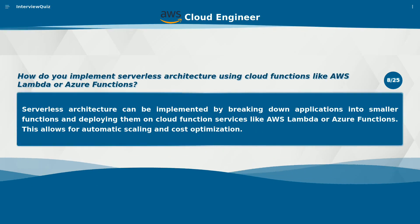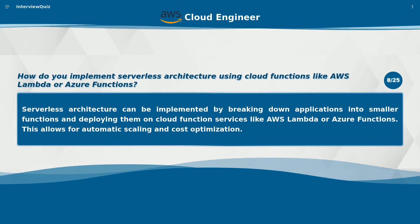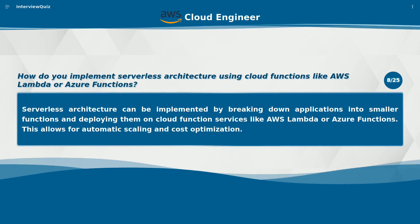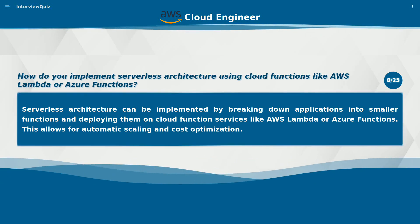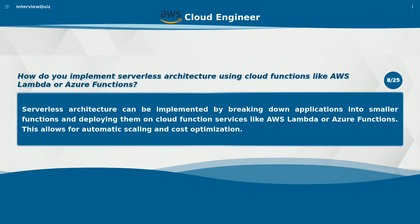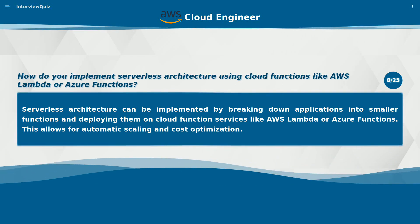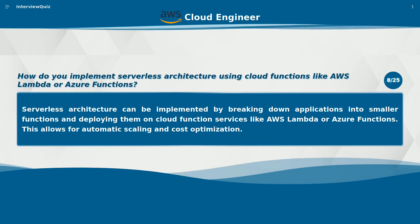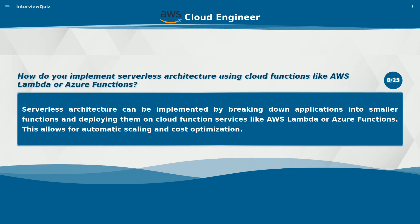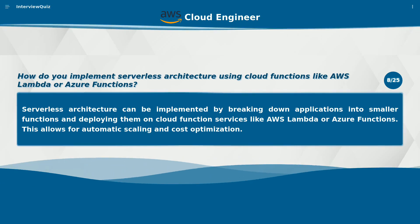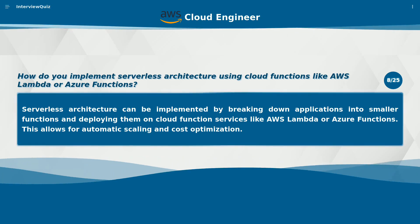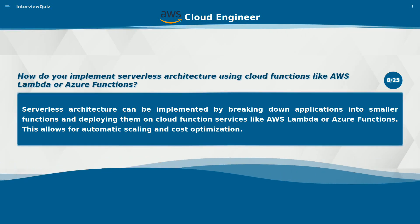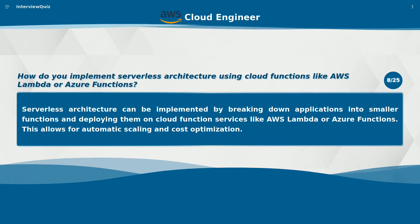How do you implement serverless architecture using cloud functions like AWS Lambda or Azure Functions? Serverless architecture can be implemented by breaking down applications into smaller functions and deploying them on cloud function services like AWS Lambda or Azure Functions. This allows for automatic scaling and cost optimization.